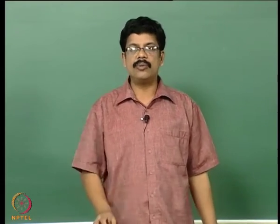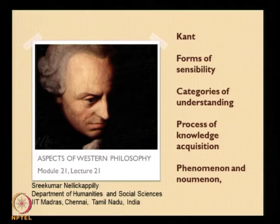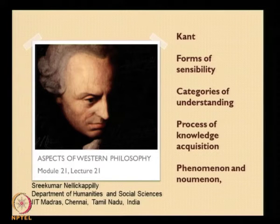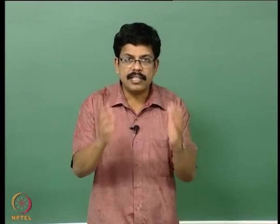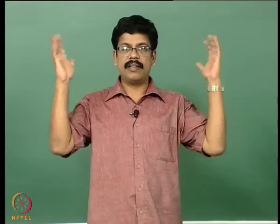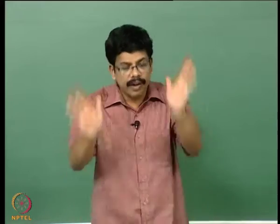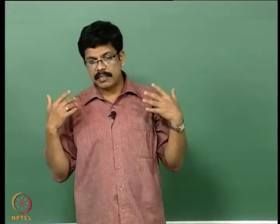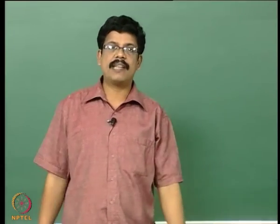By discussing transcendental aesthetic and transcendental analytic — the forms of sensibility and categories of understanding — we will attempt to explain the process of knowledge acquisition in the sense Kant was elaborating. We will also see the concepts of phenomena and noumena: the reality known to us, the reality understood by us, and the reality with a capital R which is unknowable. For Kant there is no doubt there is a domain of things in themselves, though Kant was categorical in saying this is unknowable — the famous Kantian agnosticism.